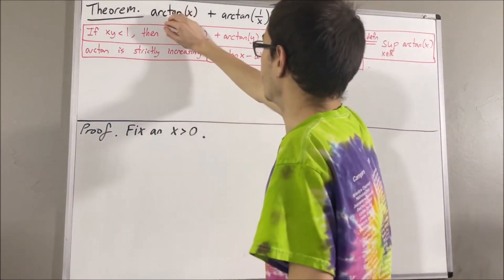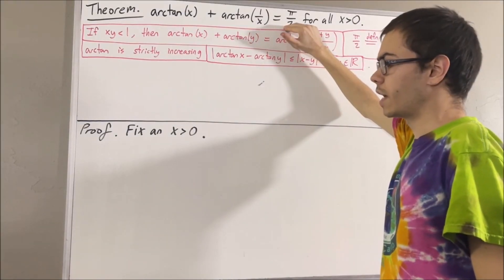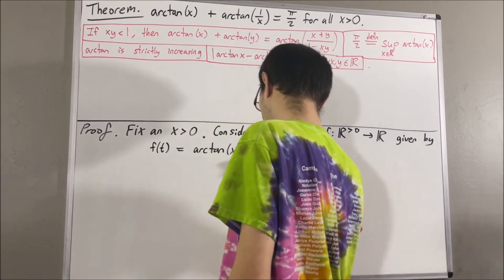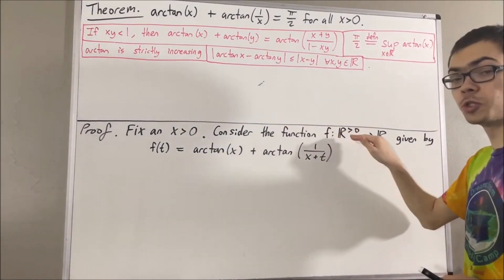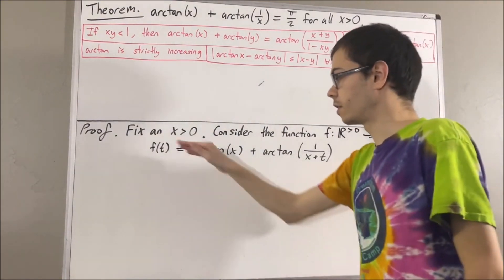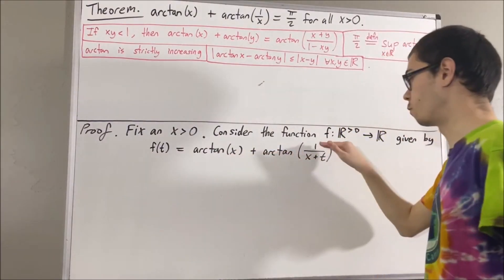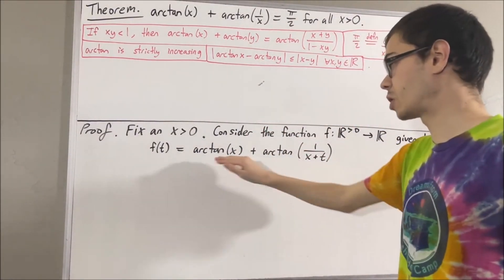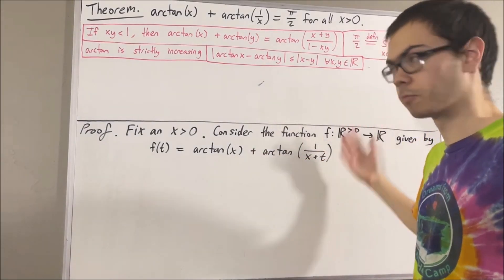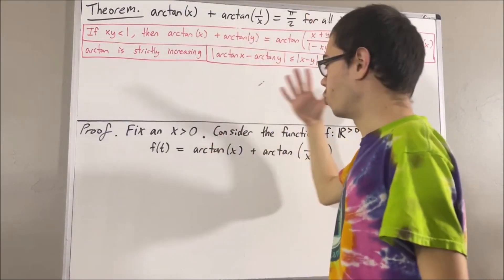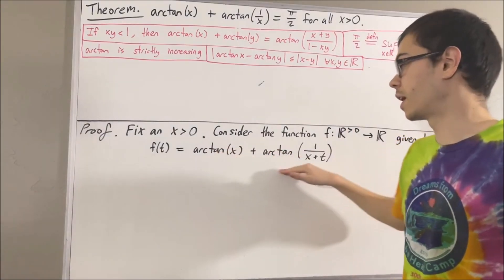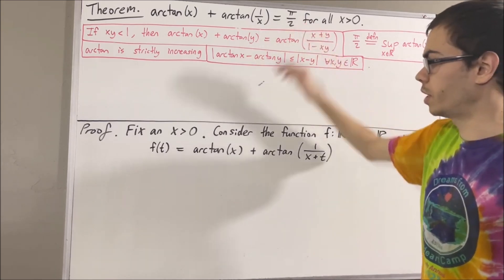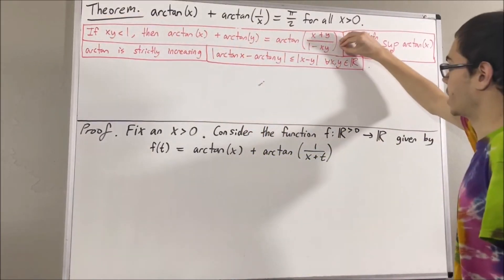From here, the whole goal is to prove this equality. The idea is to consider the function f over the domain of positive real numbers, defined as f(t) = arctan(x) + arctan(1/(x+t)). Notice, if we let t go to 0, this essentially becomes arctan(x) + arctan(1/x), which is the expression we want. We can re-express this using the arctangent addition formula that we already know.